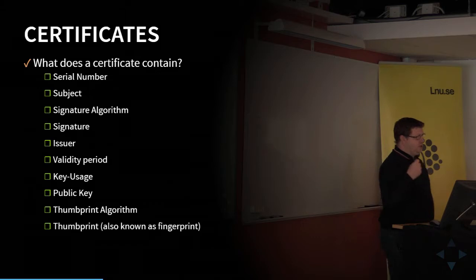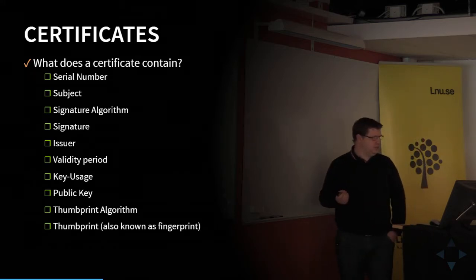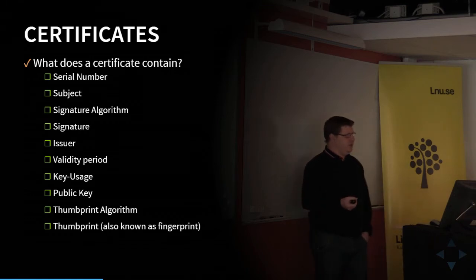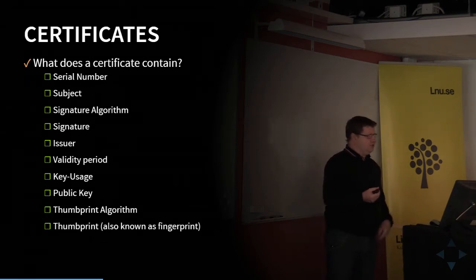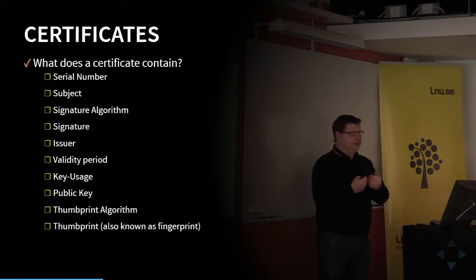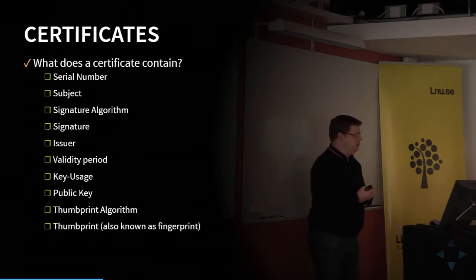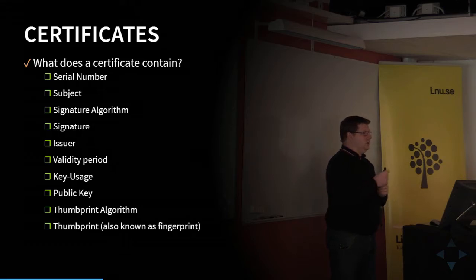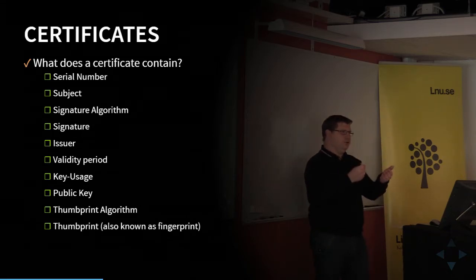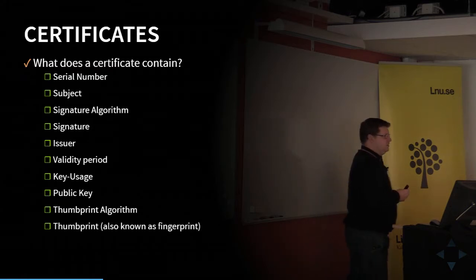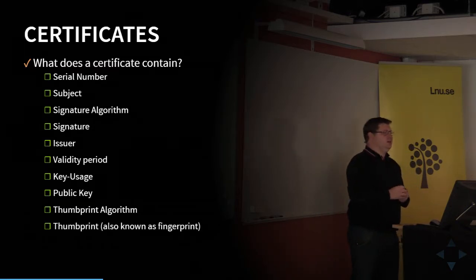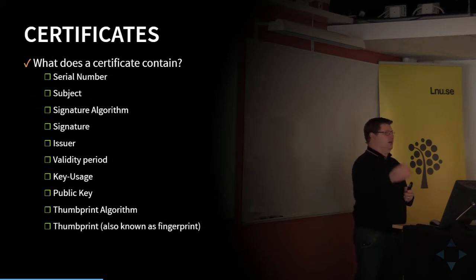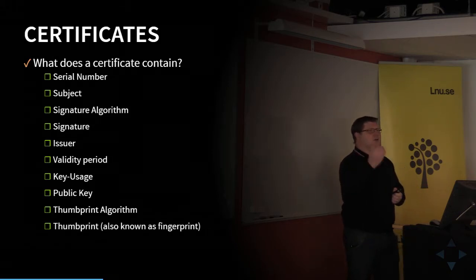The certificate states which algorithm is used when signing it. It has a signature, which is something encrypted with the private key — it could be the subject. So when you get this certificate, part of it is encrypted with the private key. Since it also includes the public key, you can decrypt that part and confirm that whoever created this certificate has the private key — otherwise they couldn't have encrypted that message.